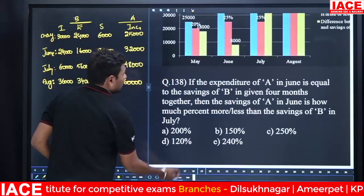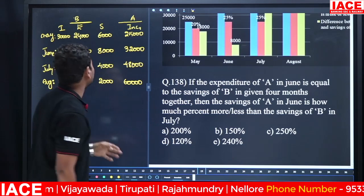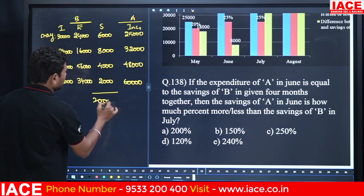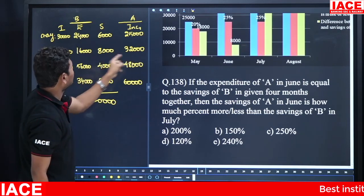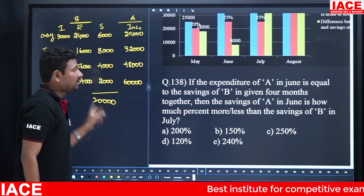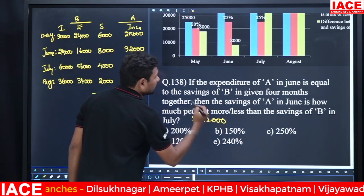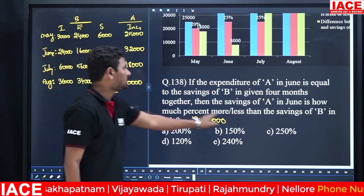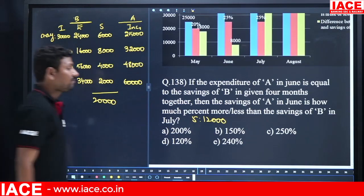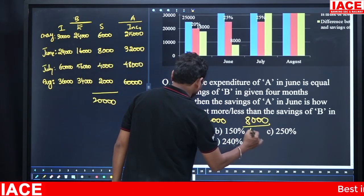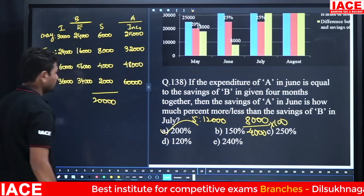Question 4: If expenditure of A in June equals total savings of B over 4 months (6 + 8 + 4 + 2 = 20,000), then A's expenditure in June = 20,000. A's June income = 32,000, so A's savings = 12,000. B's savings in June = 4,000 (from table... wait 8,000 — checking: 12,000 is 200% more than B's June savings). 8,000 × 1.5 is not it. Comparing: 12,000 vs B savings of June 4,000 — difference = 8,000, which is 200% of 4,000. Answer: 200%.